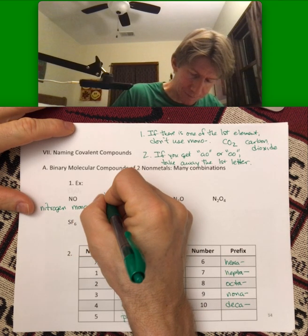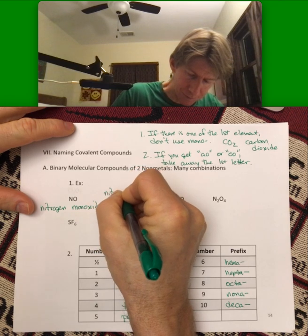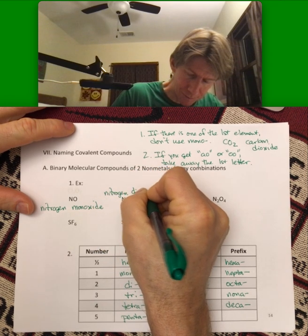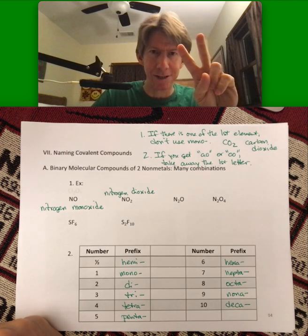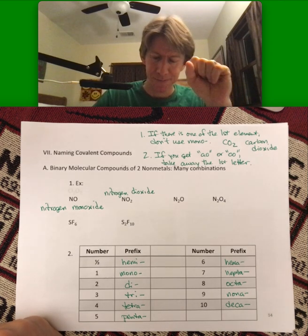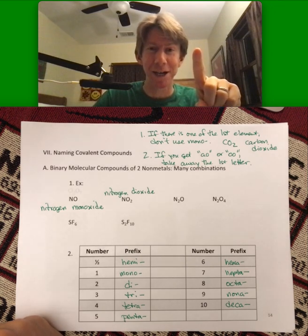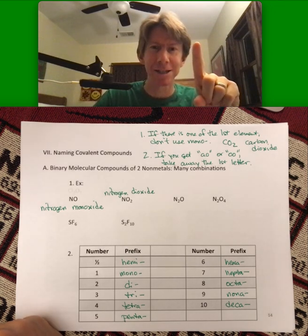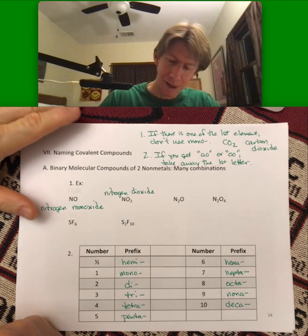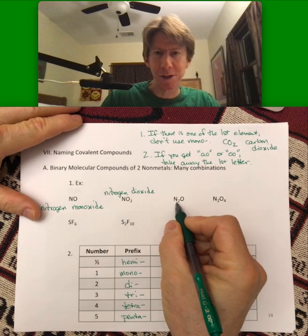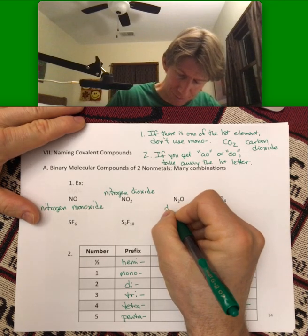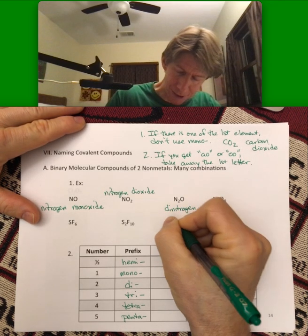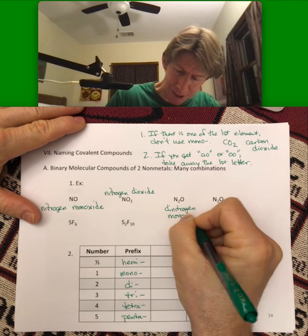So nitrogen monoxide. NO2 is going to be nitrogen dioxide. I-O always stays. You never take away an I. Rules to live by in chemistry and life. Never take away an I. Here we go.